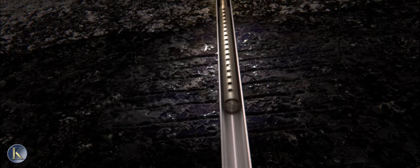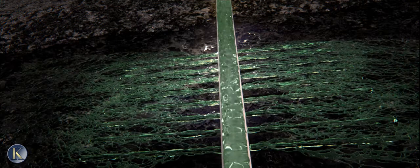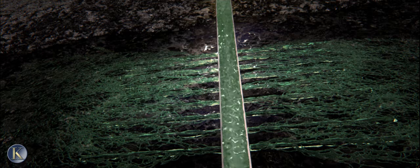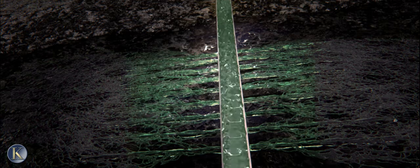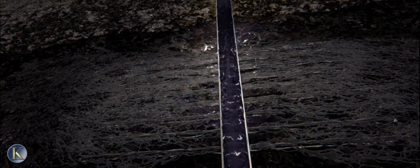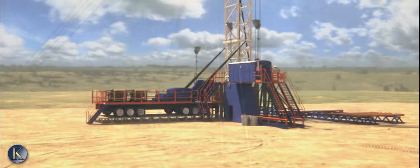A fluid known as fracking fluid is forced down the tube at high pressure, causing the surrounding strata to fracture, releasing trapped hydrocarbons. The fracking fluid is pulled back out of the hole, and oil, once trapped in the surrounding strata, starts to flow into the wellbore, ready for extraction.